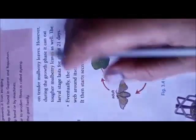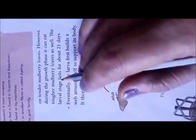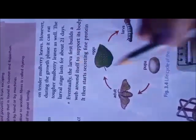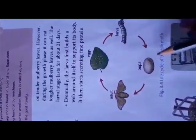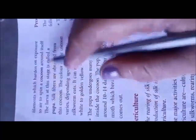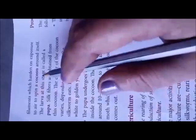Initially the larva can feed only on tender mulberry leaves, but during the growth phase it can eat tough mulberry leaves as well. This larval stage lasts for about twenty-one days. Eventually the larva first builds a web around itself to support its body, then starts secreting a fine protein filament which hardens on exposure to air, to spin a cocoon around itself. The larva at this stage is called the pupa.